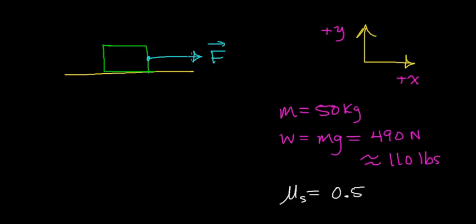If we look at this picture, we're going to try to apply a force in the positive x direction. What's going to happen is the force of static friction is going to oppose this force — the forward motion of this box — until we reach a minimum value. Then this box is going to start to slide across the floor.